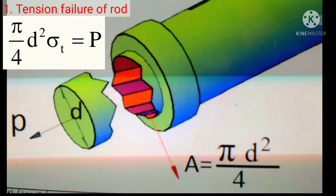First of all we calculate the tension failure of the rod. Here we can see that the area is pi by 4 times D squared, where D is the diameter of each rod. So we can write that (pi/4) D² × sigma T = P, where P is the acting tensile force on each rod and sigma T is the tensile stress.